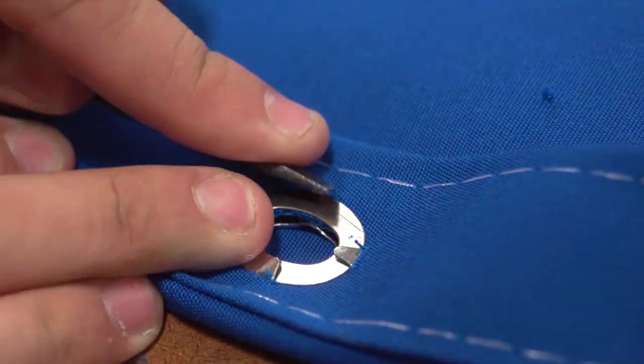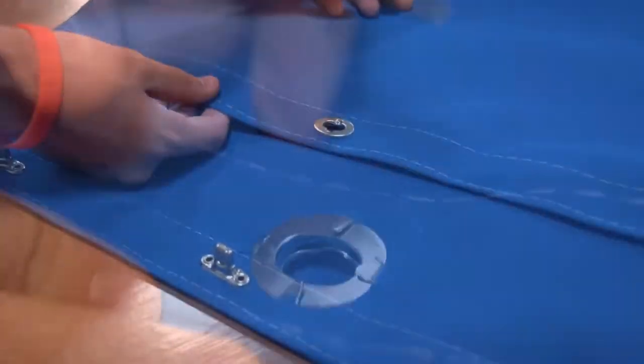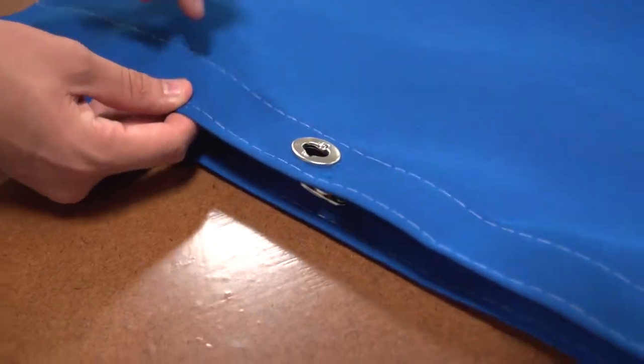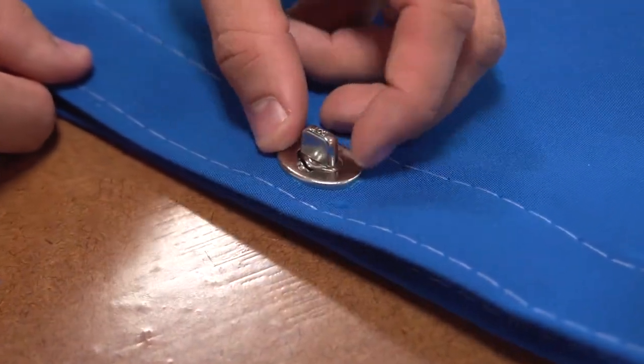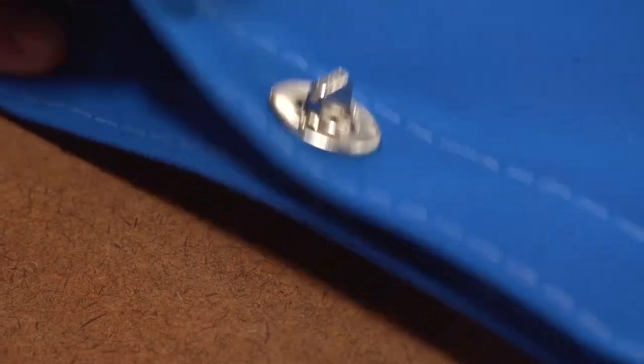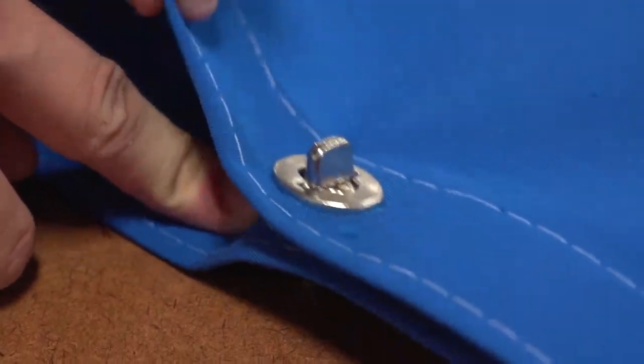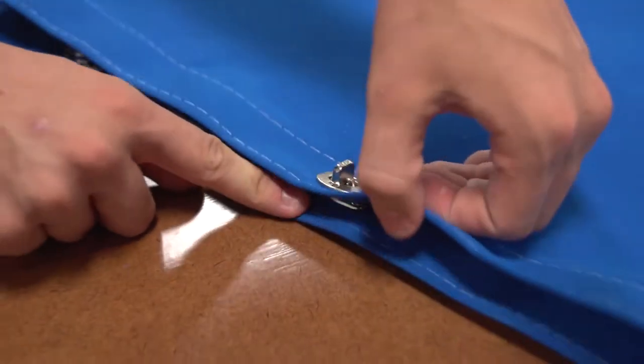We just installed an eyelet on the other end of the fabric so we could show you how the common sense stud works. Push the head of the stud through the eyelet, twist the head and the fabric assemblies are now secured together.